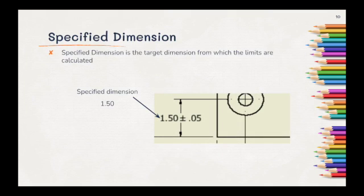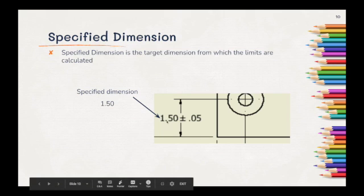So let's talk about a specified dimension. A specified dimension is the target dimension from which the limits are calculated, essentially our base value. In this image, 1.50 is our specified dimension.